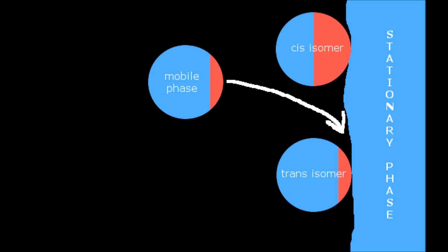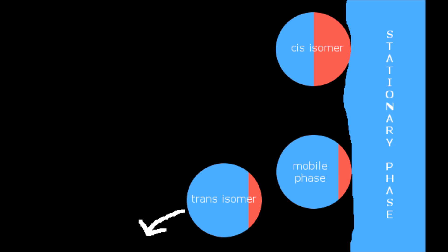They are loaded onto a column containing a polar stationary phase and bind accordingly. A slightly polar mobile phase is added which competes for binding positions on the stationary phase. The mobile phase sometimes wins this competition, pushing the mixture component that is closest in polarity off the column, which we can then collect for analysis.